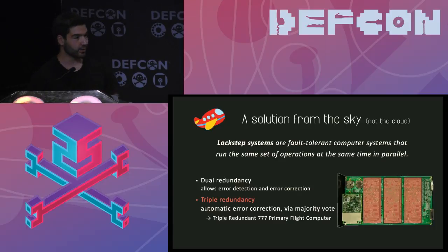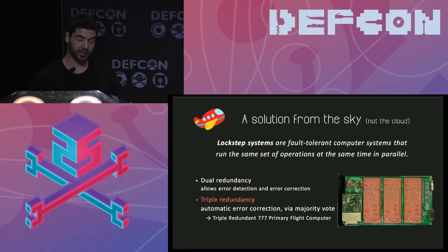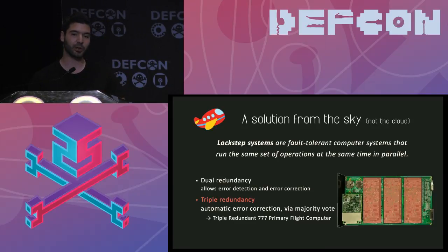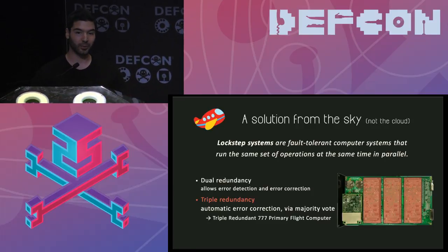There is another community - the fault tolerant community - that had a similar problem and solved it using redundant systems. Instead of using one integrated circuit, they use three coming from completely different supply chains. They build either dual redundancy systems, which allow detecting if one of two circuits is misbehaving, or triple redundancy systems where all computations are replicated between three different processors, and they perform a majority vote about what the correct output is.